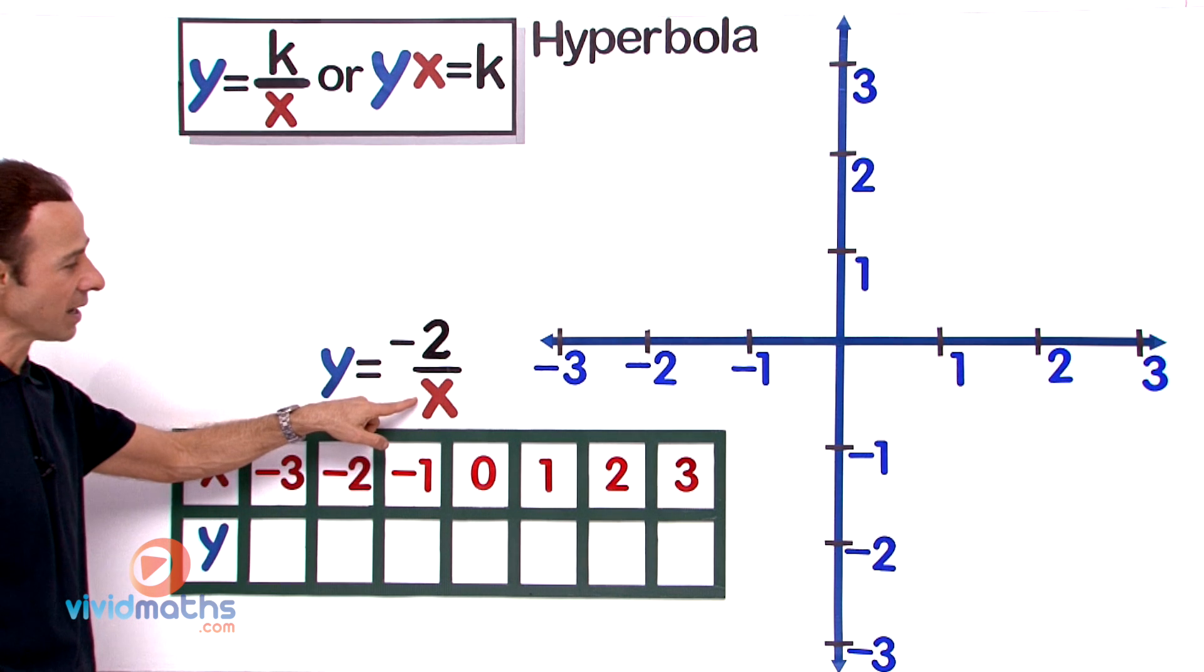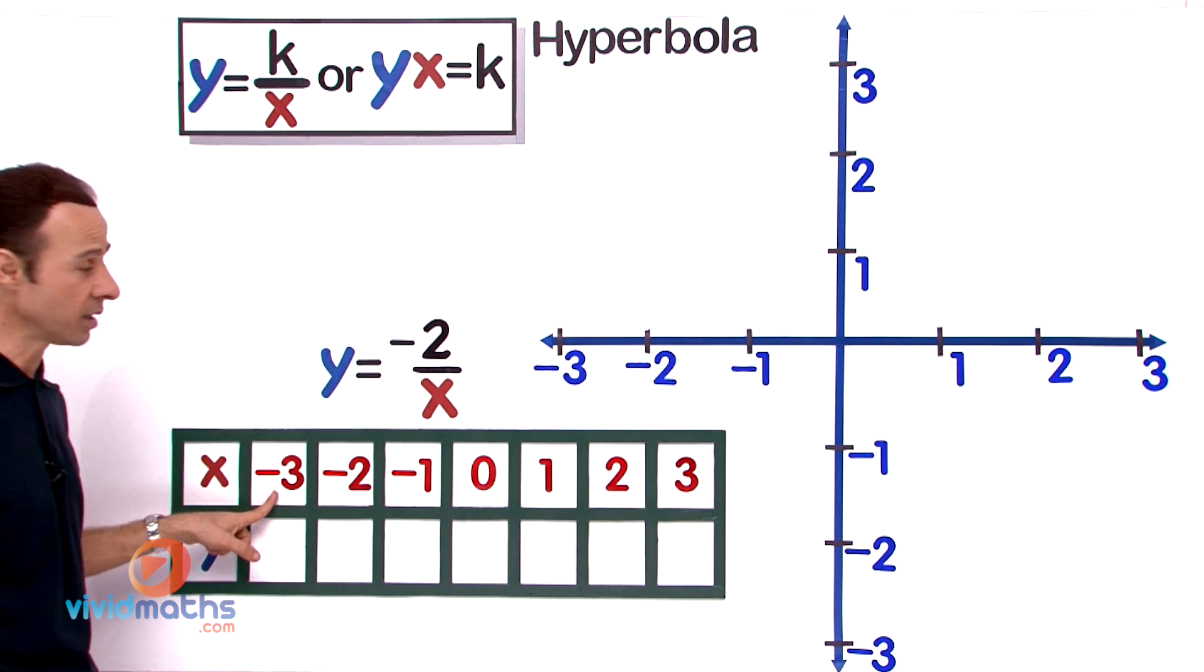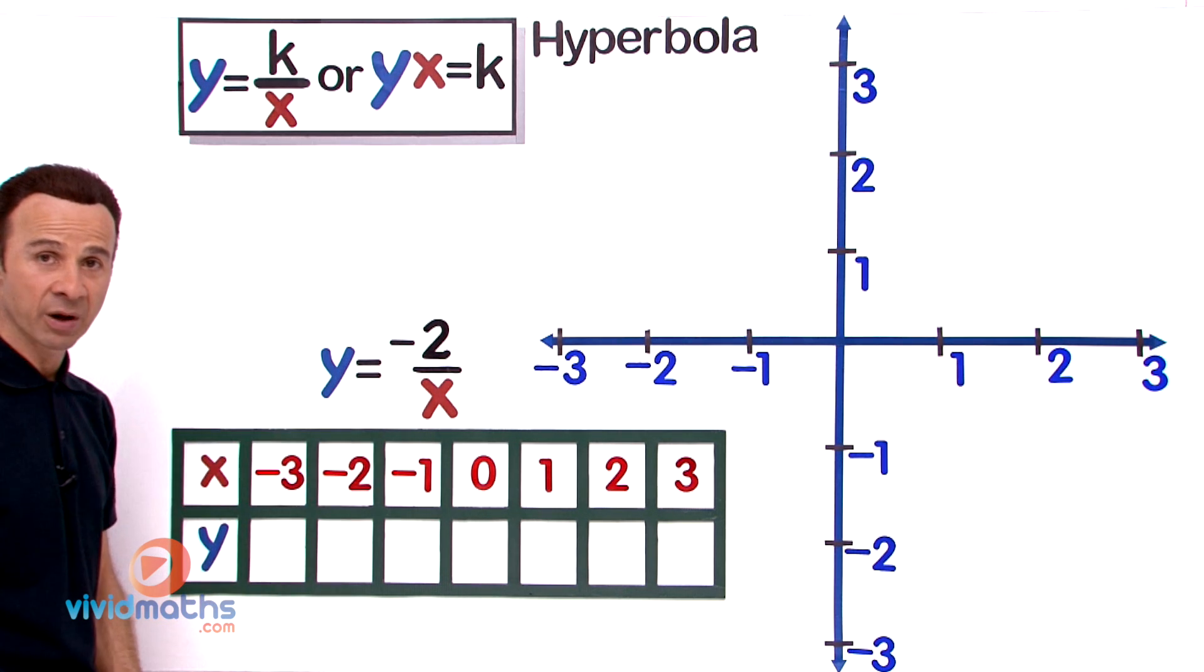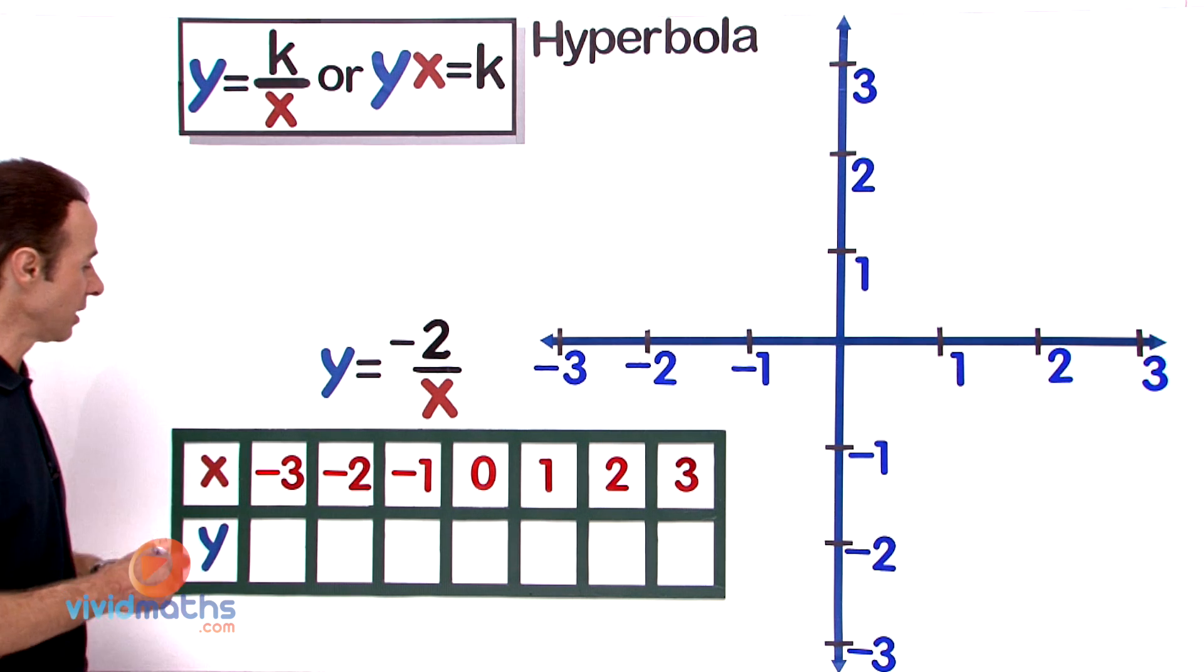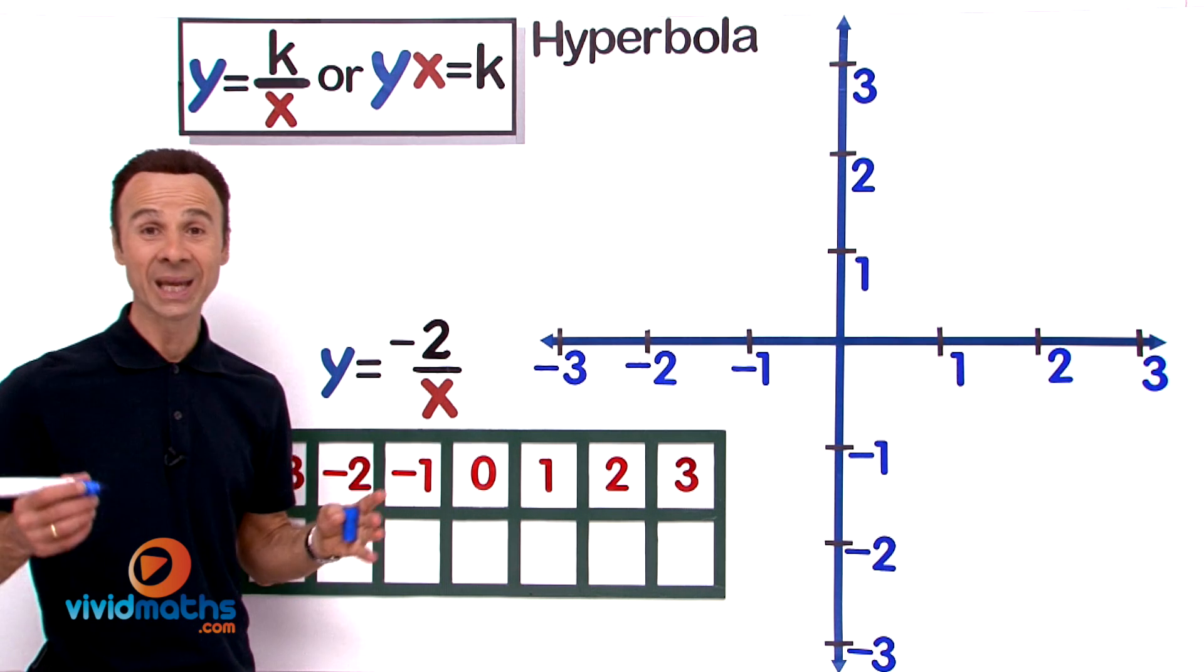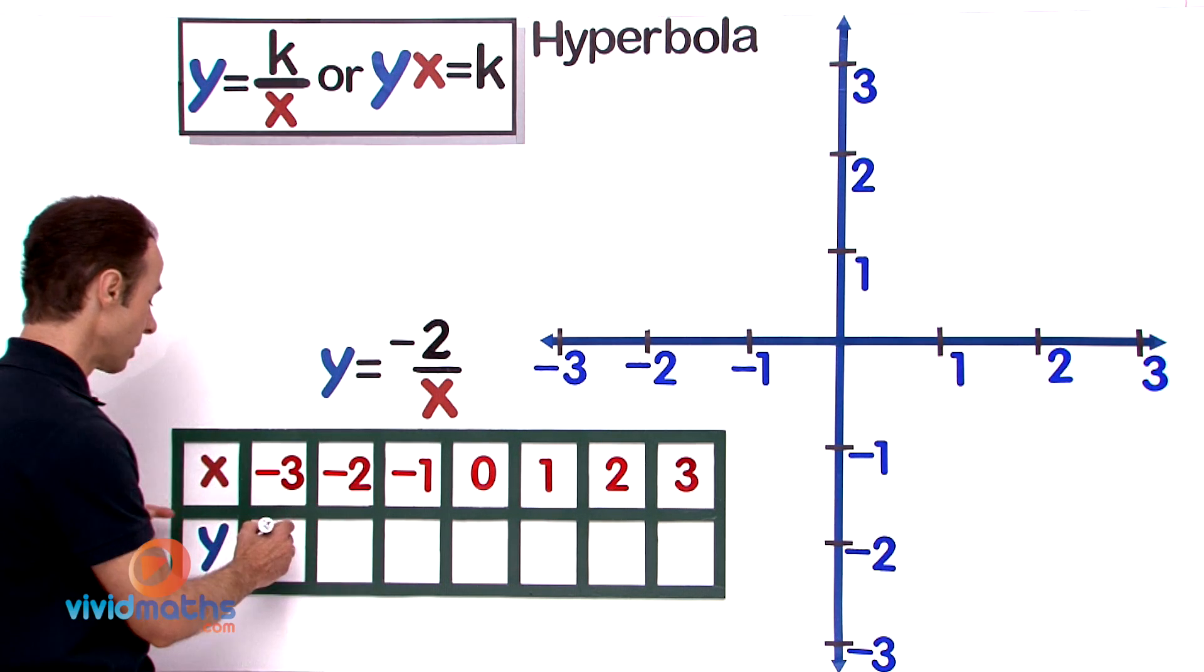We're going to substitute an x value which is already negative into a negative numerator on the top there. What is that going to give us? Well, it's going to be negative 2 over negative 3, meaning it's going to be a positive, so that's 2 thirds.